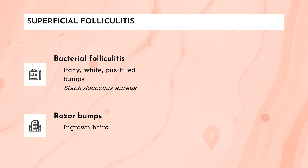The second type of superficial folliculitis is razor bumps — skin irritation caused by ingrown hairs. It mainly affects men with curly hair who shave closely and is most noticeable on the face and neck. People who get bikini waxes may also develop this in the groin area, and the condition may leave dark spots.